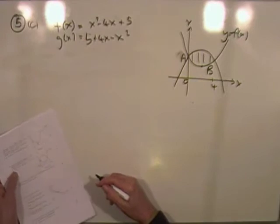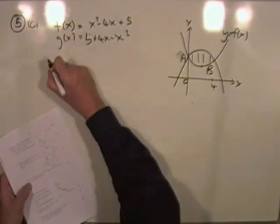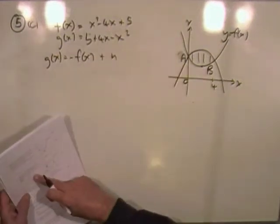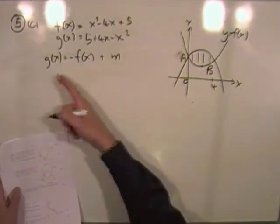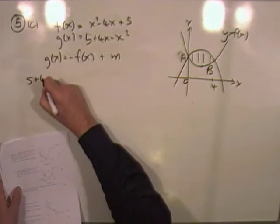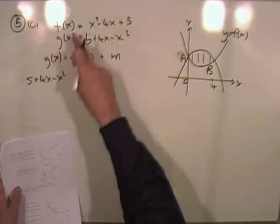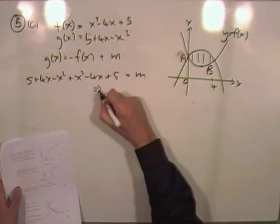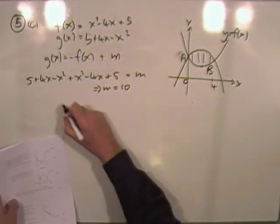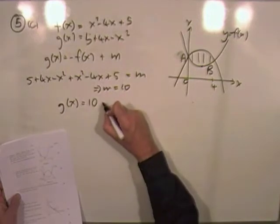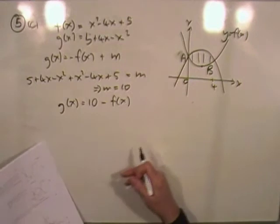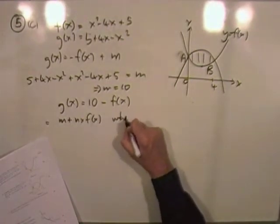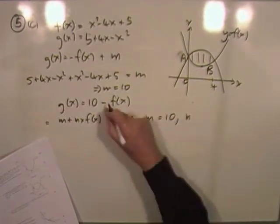Part c asks to write g(x) in the form m + n·f(x). Since g(x) = 5 + 4x − x² and f(x) = (x − 2)² + 1 = x² − 4x + 5, taking g(x) + f(x) gives all the x-terms cancelling, leaving 10. So g(x) = 10 − f(x), meaning m = 10 and n = −1.